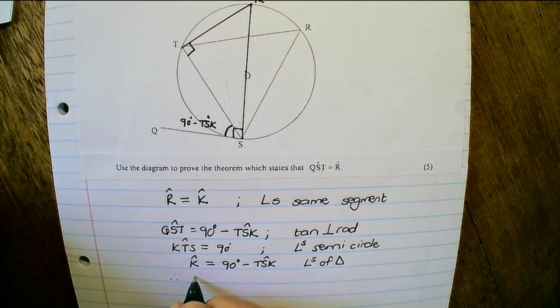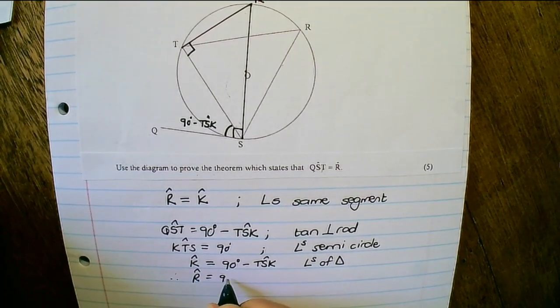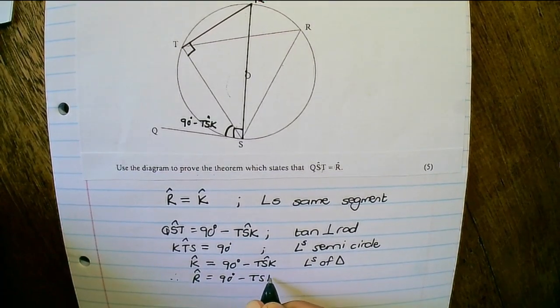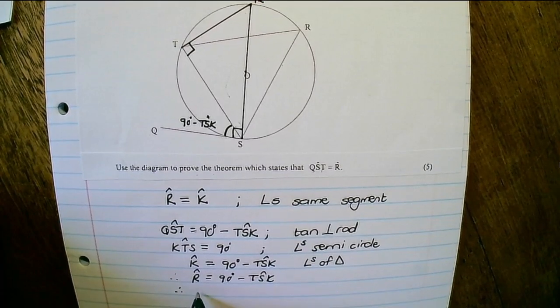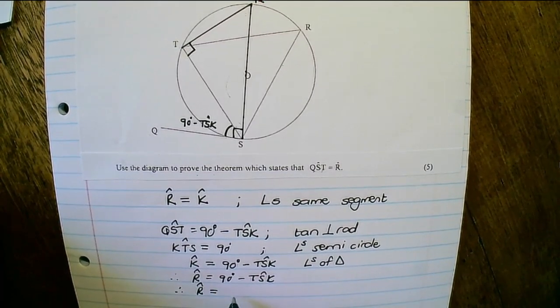Therefore, angle R would be 90 degrees minus TSK. And therefore, angle R is equals to angle QST.